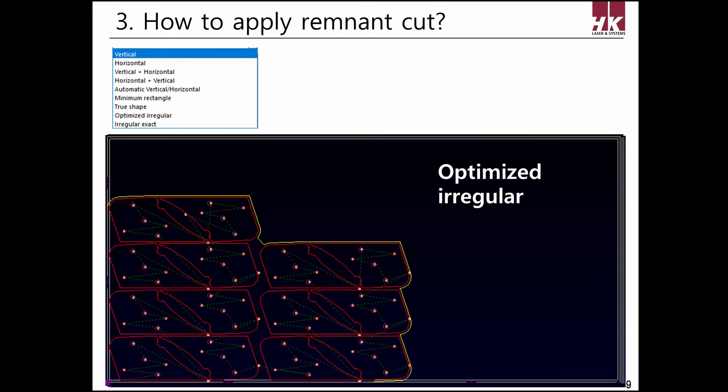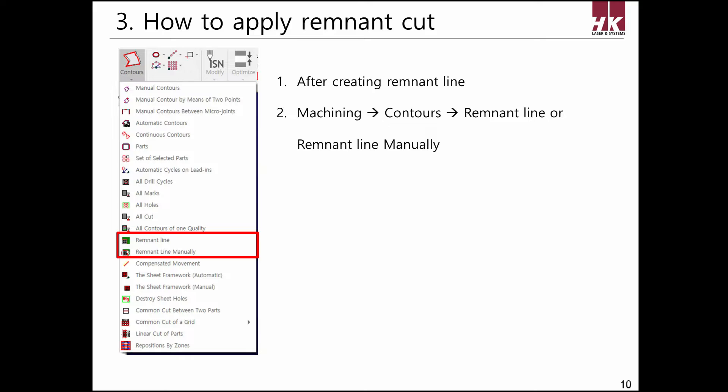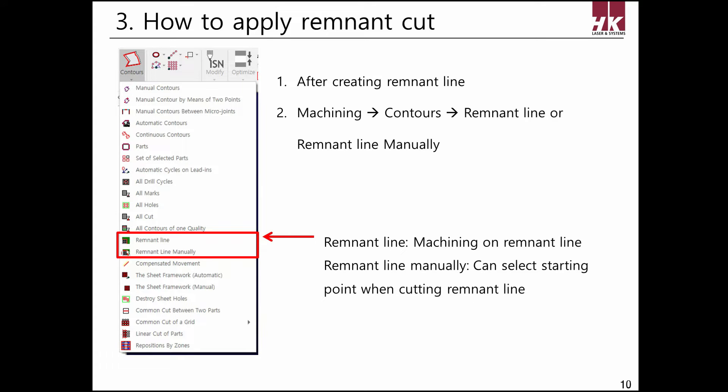To cut the remnant, make machining after making the remnant line. To make machining, use remnant line or remnant line manually in contours. Remnant line automatically makes machining along the remnant line, while remnant line manually makes machining with the user selecting the direction.